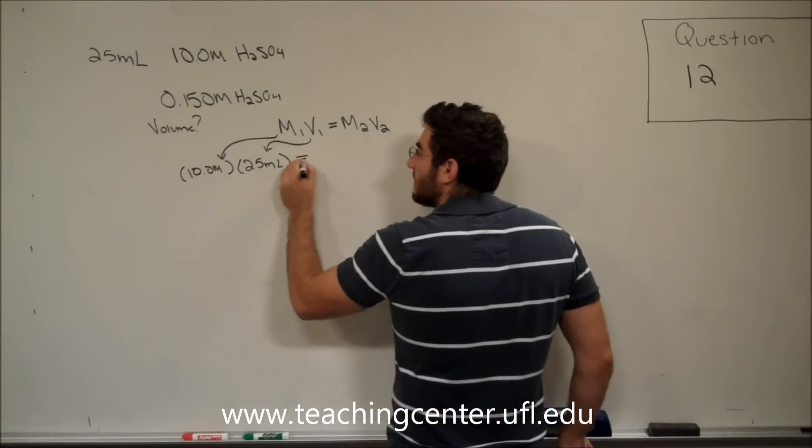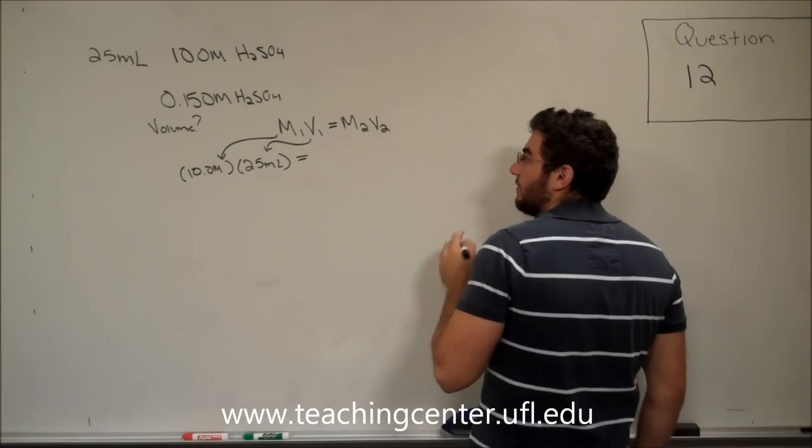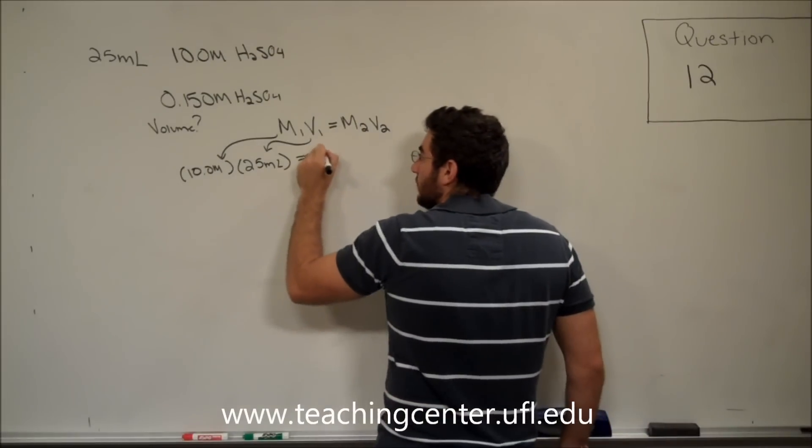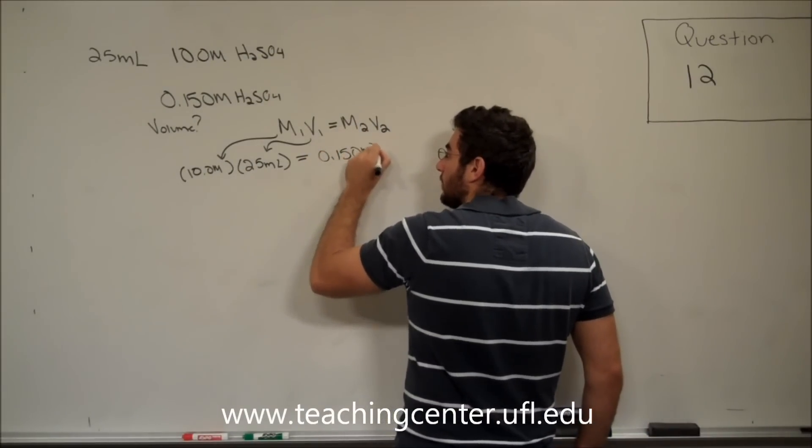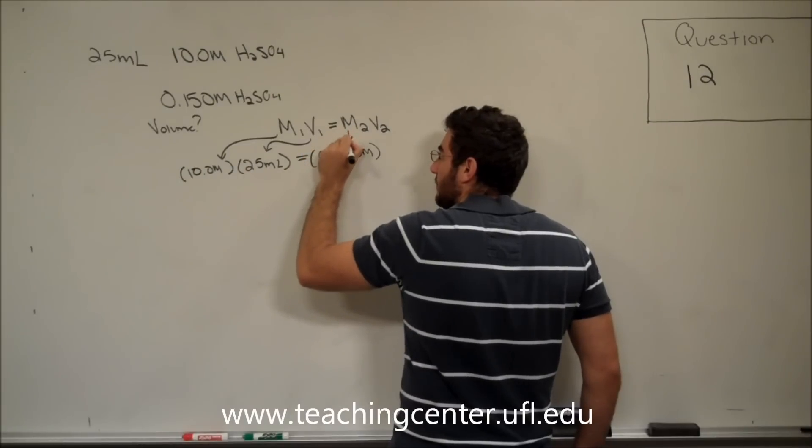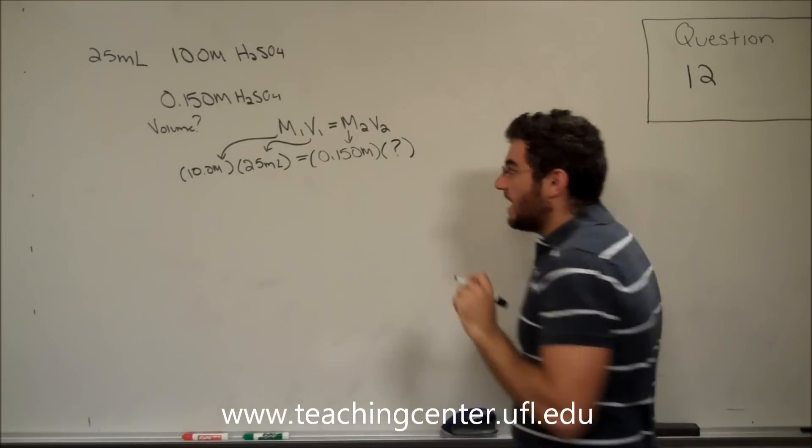It tells us that we want the second molarity to have a concentration of 0.150 molar. So, that's M2, and we don't know what the second volume is, but now we can calculate it.